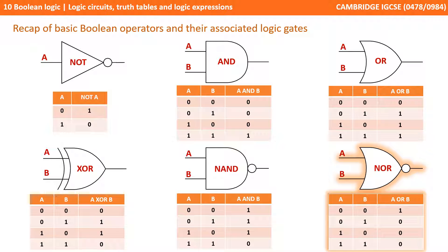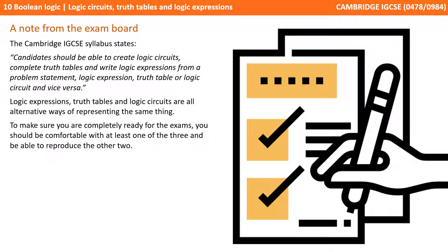The Cambridge IGCSE syllabus states that candidates should be able to create logic circuits, complete truth tables and write logic expressions from a problem statement, logic expression, truth table or logic circuit and vice versa. Effectively, logic expressions, truth tables and logic circuits are all alternative ways of representing the same thing, so you should be comfortable with at least one and able to reproduce the other two from it.